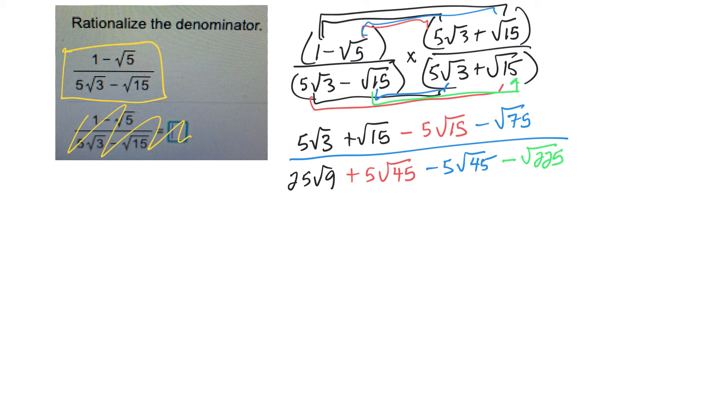Now I have to simplify. So 5 root 3, can't do anything with that. Here I have a plus root 15 minus 5 root 15. So it's like 1 minus 5 would be a negative 4 root 15.